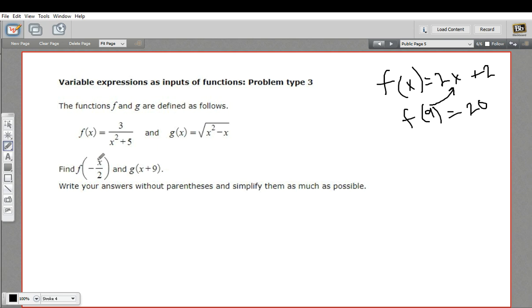Let me show you how this works with this first one. Our function f(x) is 3 over x squared plus 5, and the input here is negative x over 2. So we want to find f of negative x over 2.